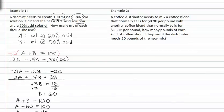Let's look at example two. A coffee distributor needs to mix a coffee blend that normally sells for $8.90 per pound with another coffee blend that normally sells for $11.16 per pound. How many pounds of each kind of coffee should be mixed if the distributor needs 50 pounds of the new mixture?